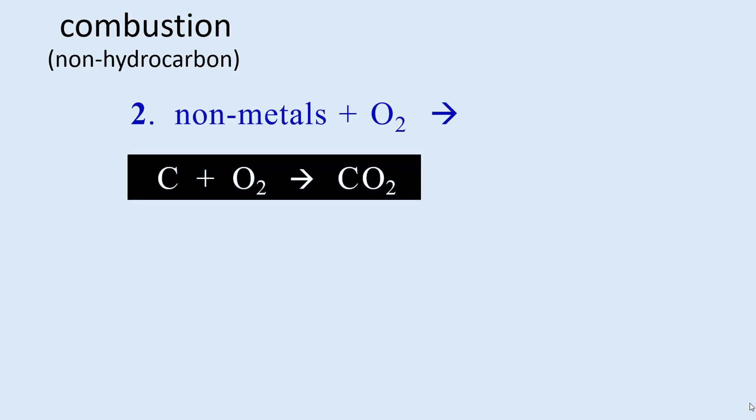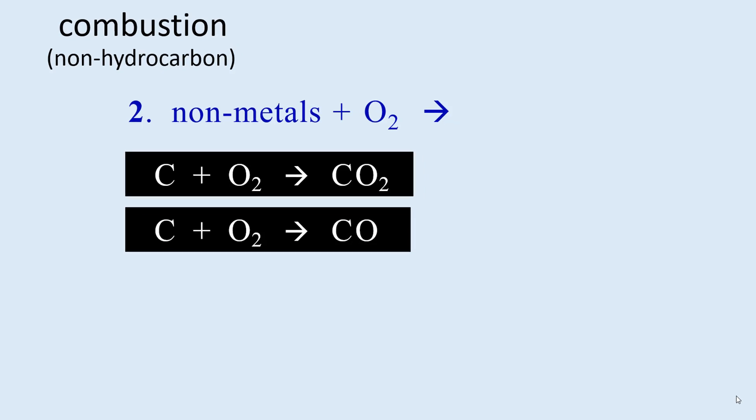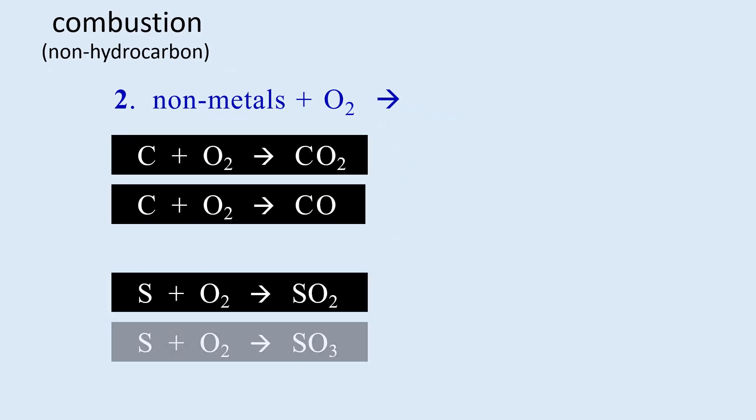Next are nonmetals. However, it is very difficult to predict the products of reactions between nonmetals. Carbon and oxygen reacting can produce both carbon dioxide and carbon monoxide. Two of the products of burning sulfur are sulfur dioxide and sulfur trioxide.